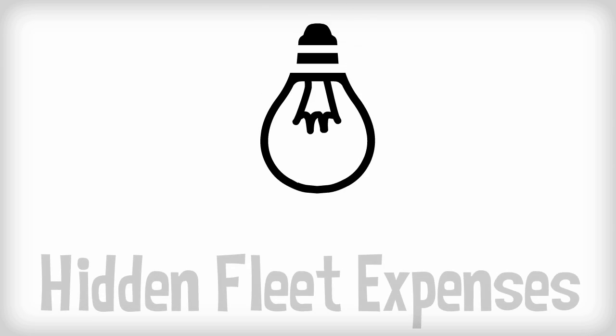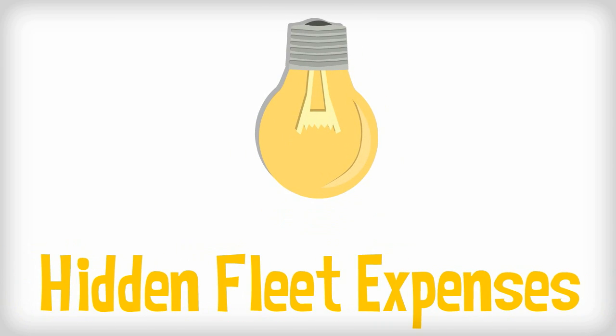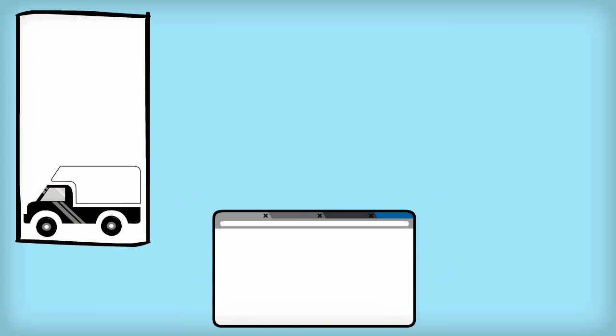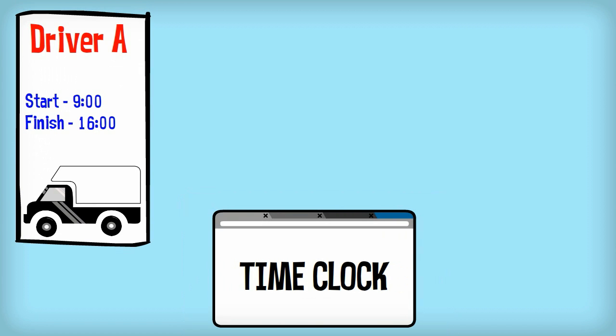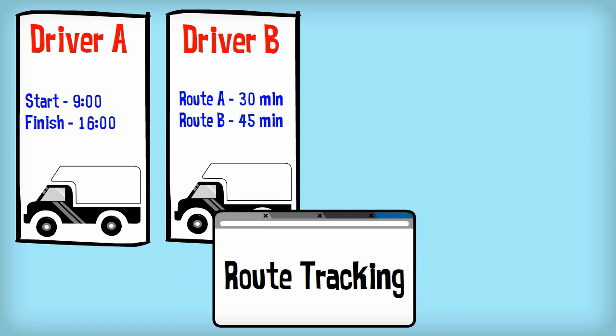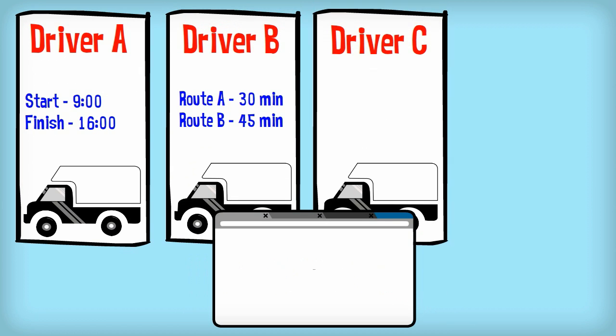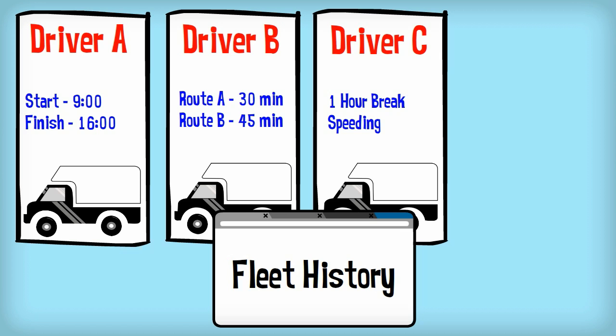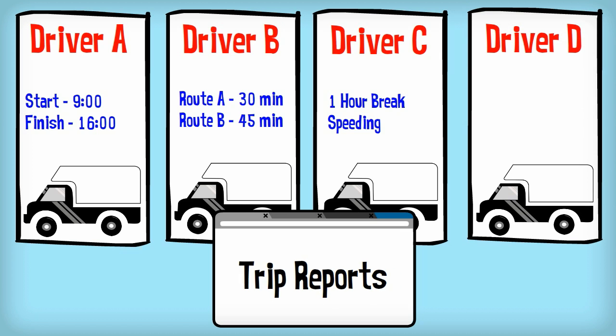AVL View brings these hidden fleet expenses to light, giving you the chance to do something about them. Offering a true time clock to see exactly when drivers begin and end their day, route tracking to see which route is really the most cost effective, fleet history telling you exactly what your drivers are up to, trip reports and alerts to inform you when your vehicles are not on time.